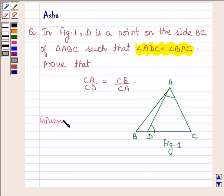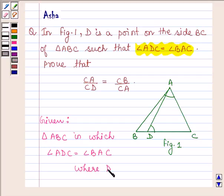Here we are given a triangle ABC in which angle ADC equals angle BAC, where D is a point on the side BC.